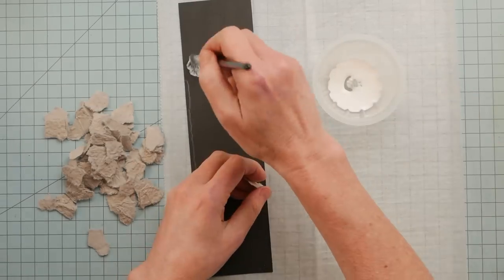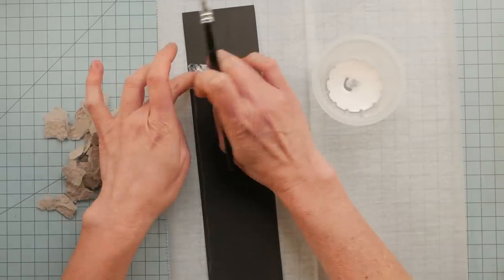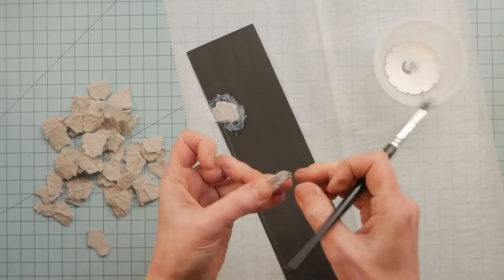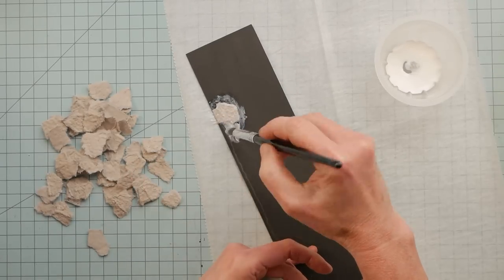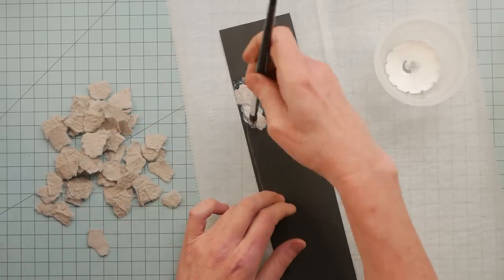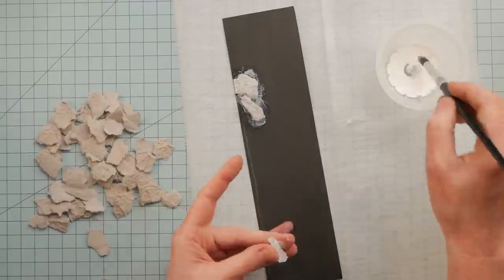I'll leave the link below. But this is just an egg carton, as you can probably guess. And I just rip it up into miscellaneous random pieces. And then I take white PVA glue.